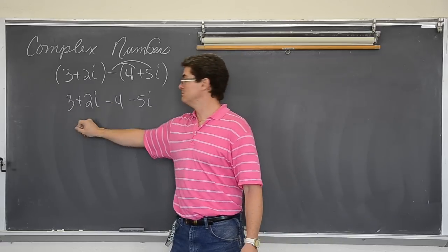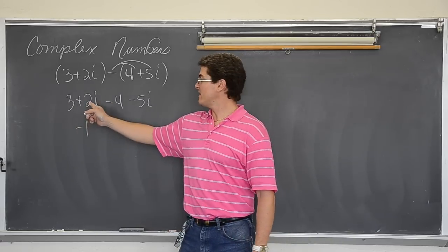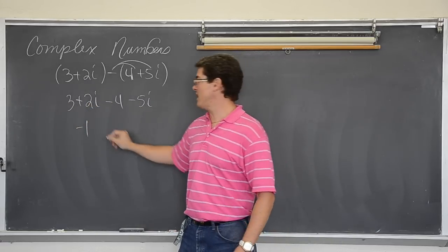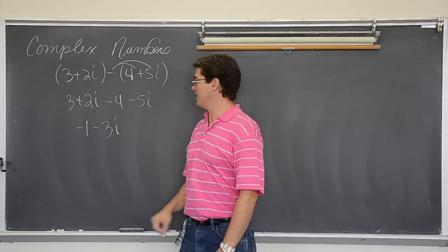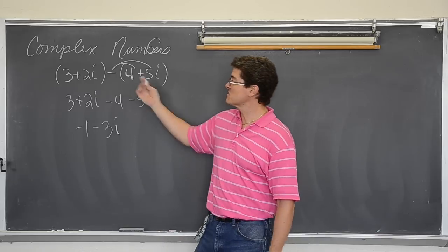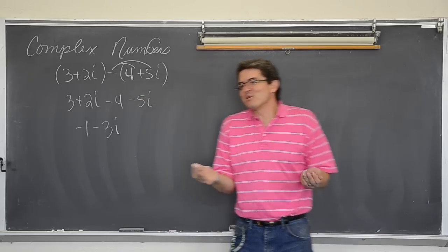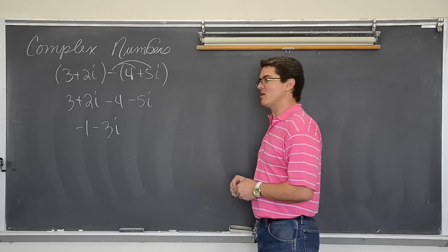Distribute to get the negative through the parenthesis and look for like terms. 3 and negative 4. Negative 1. What about 2 and negative 5? Well 2 minus 5 is negative 3i. Real and imaginary. So it looks very similar to basic algebra skills you have done for a long time.